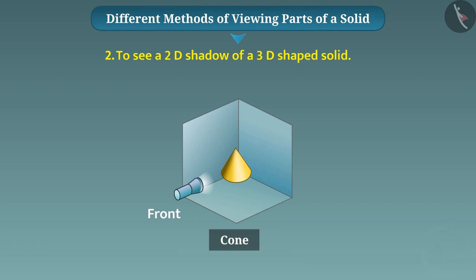Exactly! This will create a triangular-shaped shadow on the screen. In the same way, if the light is focused on the cone from the side direction, then again, a triangular-shaped shadow will be formed on the screen.